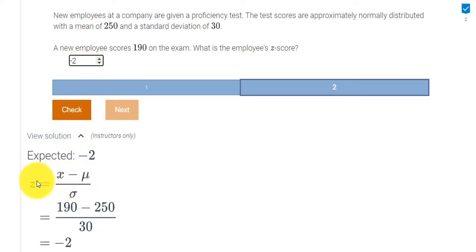But let's see how they did it here. So this is the formula we're going to use: Z equals X minus μ divided by the standard deviation. So we were given 190. So the X is 190. The mean was 250. So we replaced the μ with 250. And the standard deviation was given as 30. So when we do 190 minus 250 divided by 30, we should get negative 2.